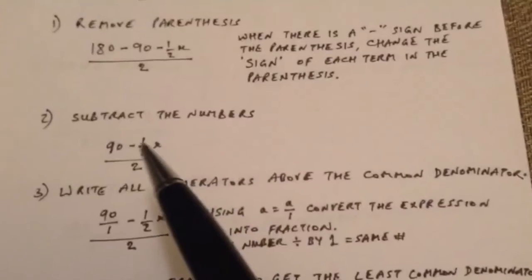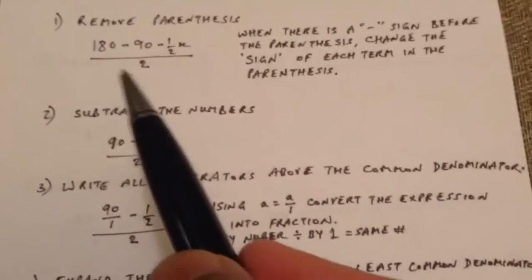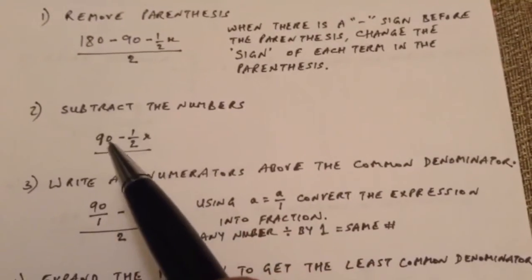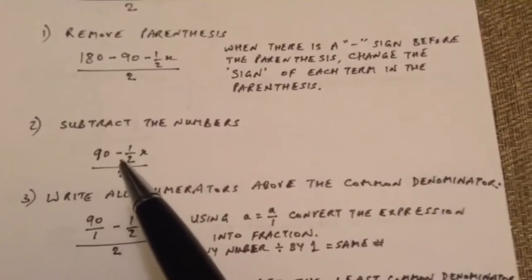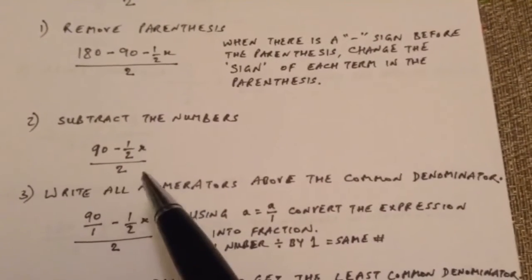And then we do the subtraction, subtract the numbers. So 180 minus 90 is 90, and we have 90 minus one-half x over 2.